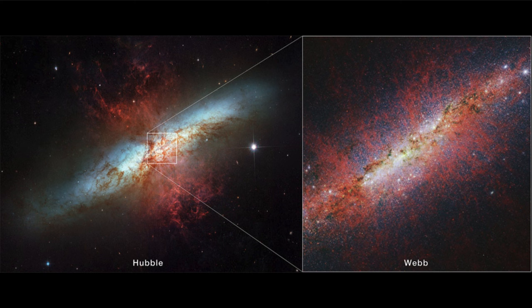Future models and future observations can help us better understand what is going on in a galaxy like this — a starburst galaxy caused by interactions with other nearby galaxies. Future images from Webb studying this galaxy and other similar galaxies could lead to a much better understanding of what goes on at the central regions of these interacting galaxies.